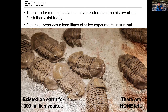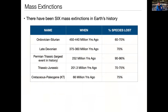Extinctions happen all the time — we see creatures for periods of time in the record and then there's no more. But one of the interesting things about the fossil record is there have been mass extinctions where significant fractions of all the species on Earth perish. Historically there are six mass extinctions in the fossil record. The oldest one we see is after the Cambrian explosion: the Ordovician-Silurian extinction, 450 to 440 million years ago, where we lost about 60 to 70% of all the species on Earth.